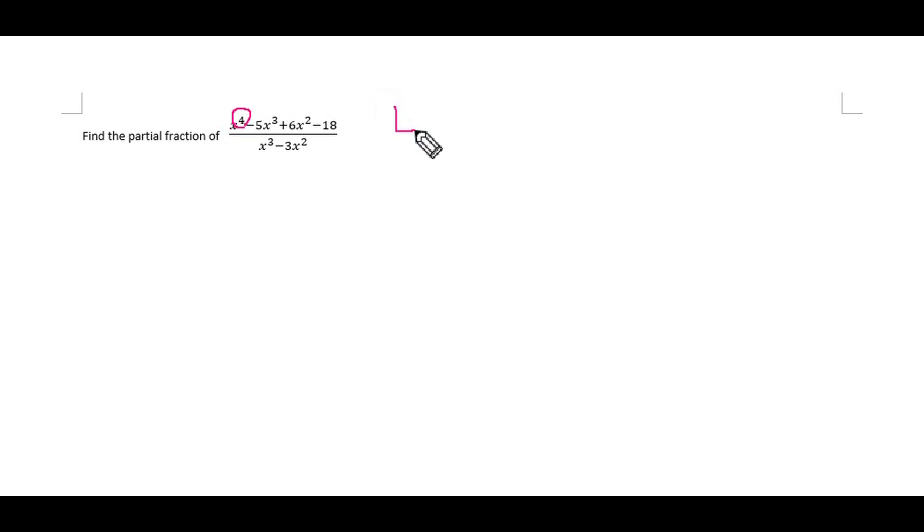Find the partial fraction of x⁴ - 5x³ + 6x² - 18 over x³ - 3x². First of all, we have to verify whether it is a proper or improper fraction. The highest degree of the numerator is 4, and the highest degree of the denominator is 3. Since 4 is greater than 3, it is an improper fraction.